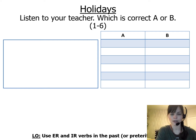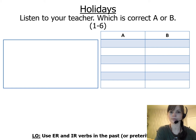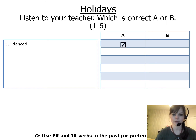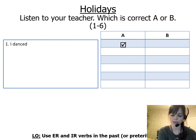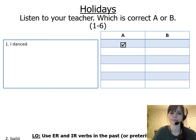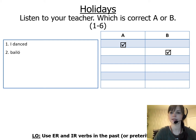Number one: I danced. Is it bailé or bailó? The correct answer is bailé. Number two: is bailó — we danced or he or she danced? The correct answer is B: he or she danced.